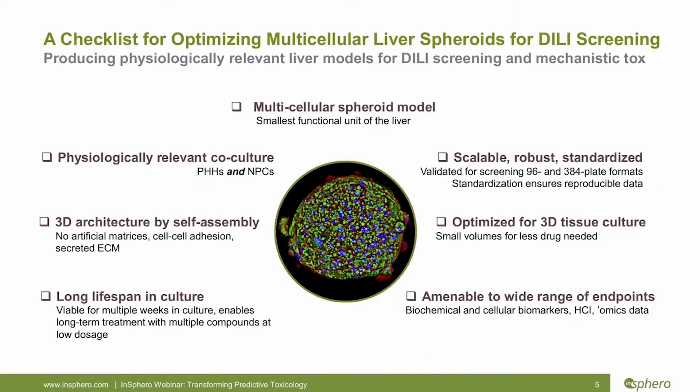The big question is: in order to mimic in vivo hepatotoxicity in vitro, what features are important to recapitulate? First of all, an in vitro model should be multicellular — not just hepatocytes, but also non-parenchymal cells combined in a physiologically relevant manner. The addition of other cell types is important not only because they exist in the liver, but because they might have a contributing factor to toxicity. An interesting aspect of 3D culture is the ability to allow cells to self-aggregate, making their own extracellular matrices without an artificial collagen membrane.